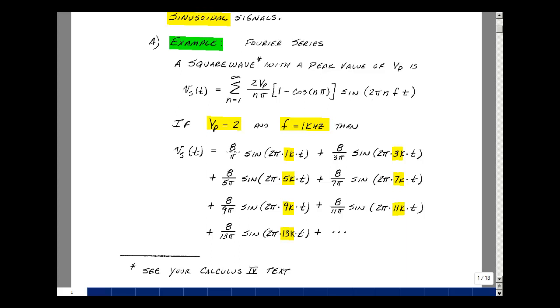Let me make some comments about terminology. The 1 kilohertz signal here is referred to as the fundamental frequency. This was the frequency of the square wave we were looking at. The 3 kilohertz is referred to as the third harmonic, 5 kilohertz the fifth harmonic, the seventh harmonic, the ninth harmonic, the eleventh harmonic, the thirteenth harmonic.